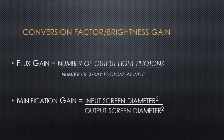Remembering from prior discussion, brightness gain references factors of flux and minification. Flux is the ratio of the number of output light photons over the number of input x-ray photons — or, said more simply, using a few x-ray photons to produce many more light photons. This is the image intensifier's conversion efficiency.